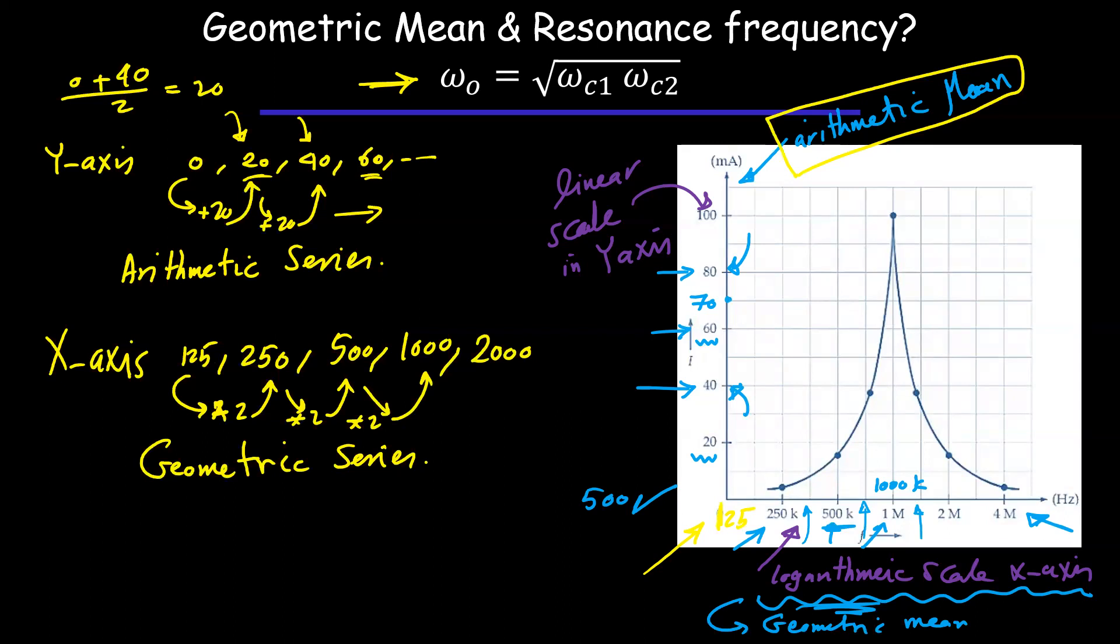And this is in geometric series, when we try to get a middle point between two points, we have to use the geometric mean. Like for example, 125 multiplied by 500 under the square root, that will give us 250. So that's why we use the geometric mean here because it's a geometric series. So with arithmetic sequences we use arithmetic mean, the average that we all know, but for geometric sequences or geometric series we use the geometric mean.